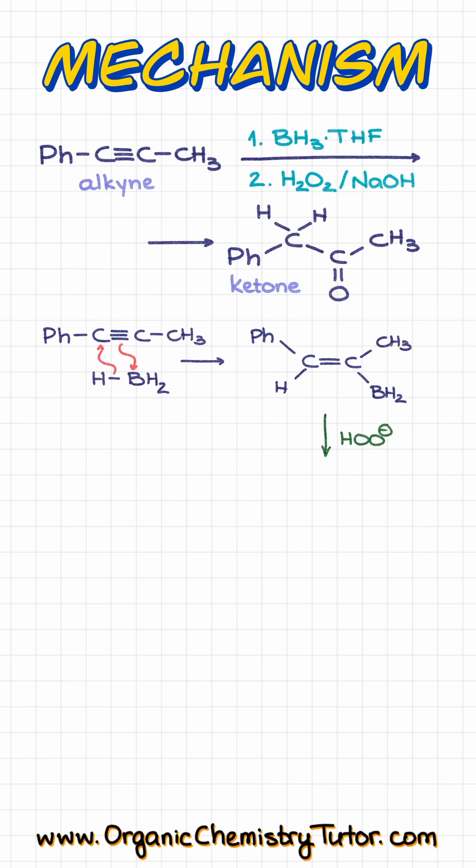The conjugate base of the peroxide is going to come in and attack the boron, giving us the following intermediate. Then our carbon chain is going to shift from the boron onto the oxygen, effectively inserting that oxygen between carbon and boron, giving us this guy.